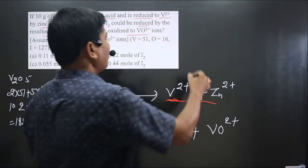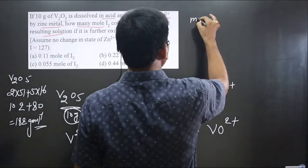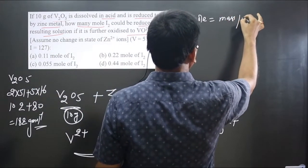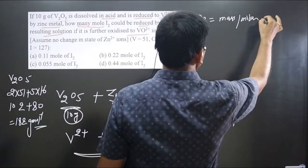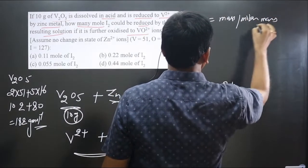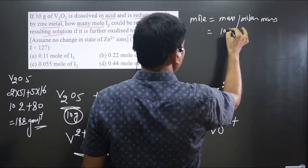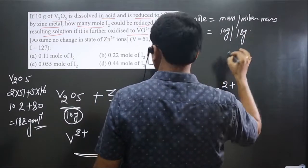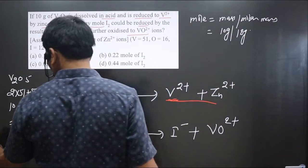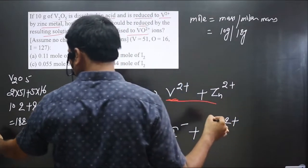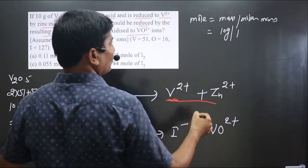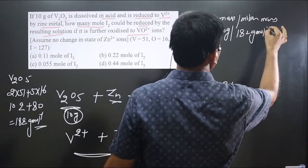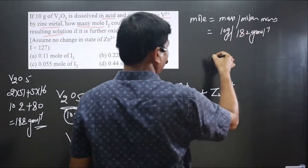We convert mass into moles using the formula: moles = mass / molar mass. Mass is 10 grams divided by molar mass 182 g/mol. Grams cancel.